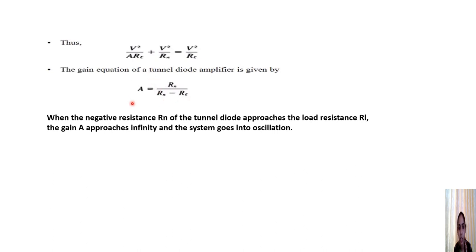From the gain expression A = Rn/(Rn − RL), when the negative resistance Rn approaches the load resistance RL, the denominator becomes zero and gain approaches infinity. When the gain approaches infinity, the system goes into oscillation, so the tunnel diode can also work as an oscillator.